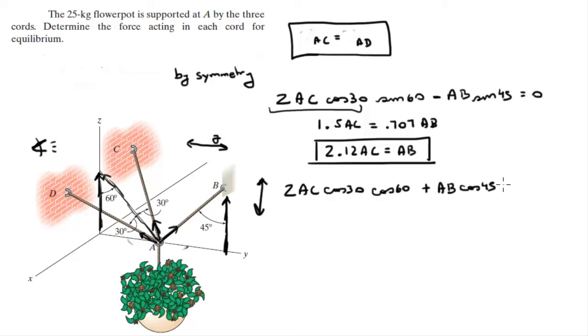Plus AB times cosine of 45, minus 25. 25 is the mass of the flower pot, times the acceleration of gravity will give me the force going down and all of that is equal to zero. So when you clean this up, you get that 0.866AC plus 0.707AB equals 245.25. And when you get this equation, let's call this equation 2, let's call this equation 1.